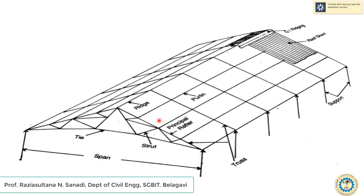You can see here the isometric view of a roof truss shed showing its different parts. It consists of principal rafters, ties, struts, ridge, and purlins.